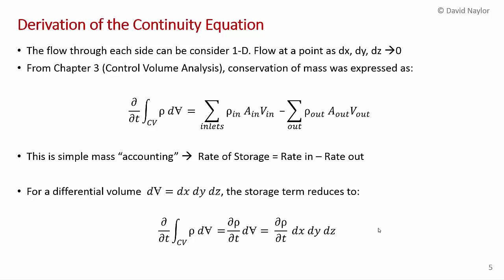The flow through each side of this control volume can be considered one-dimensional, because ultimately we let dx, dy, and dz go to zero — we're considering flow at a point, so we don't need to worry about variation across each face. From Chapter 3, conservation of mass can be expressed as: rate of storage in the control volume equals rate in minus rate out. This is simple accounting — rate of storage equals rate in minus rate out.